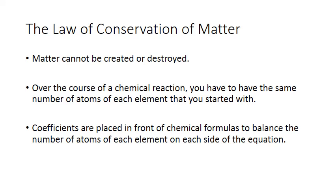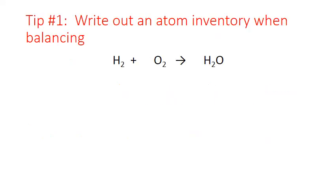When balancing a chemical equation, the only thing you can do is add a coefficient. You can't change subscripts within a formula to manipulate the number of atoms, because that would change the identity of the molecules that are reacting. So the only thing you can do is add a coefficient. We're going to do some examples and I'll give you a few tips along the way for balancing equations.